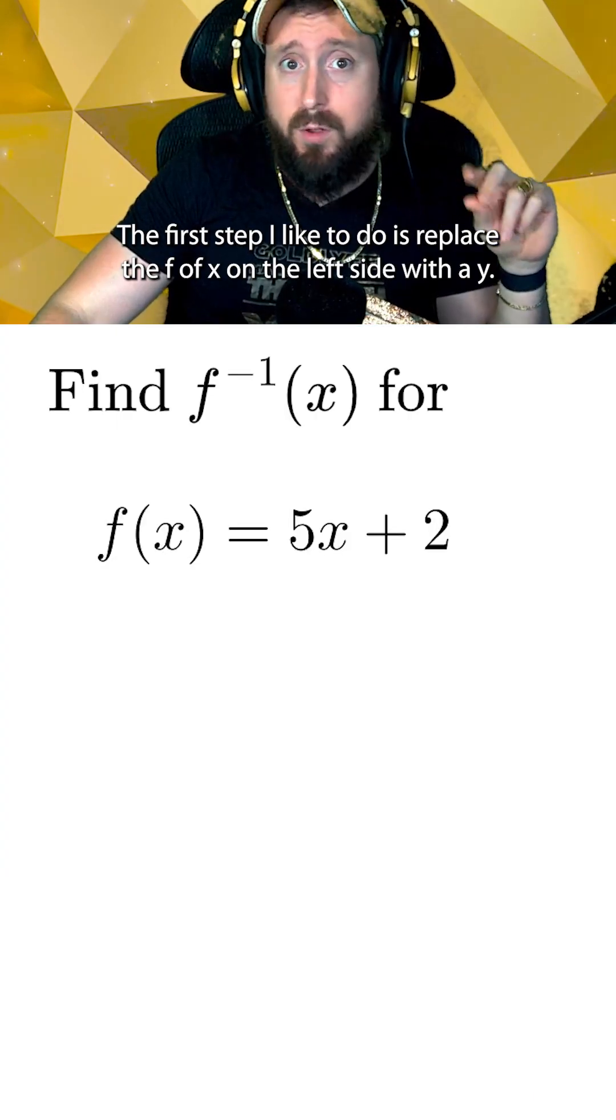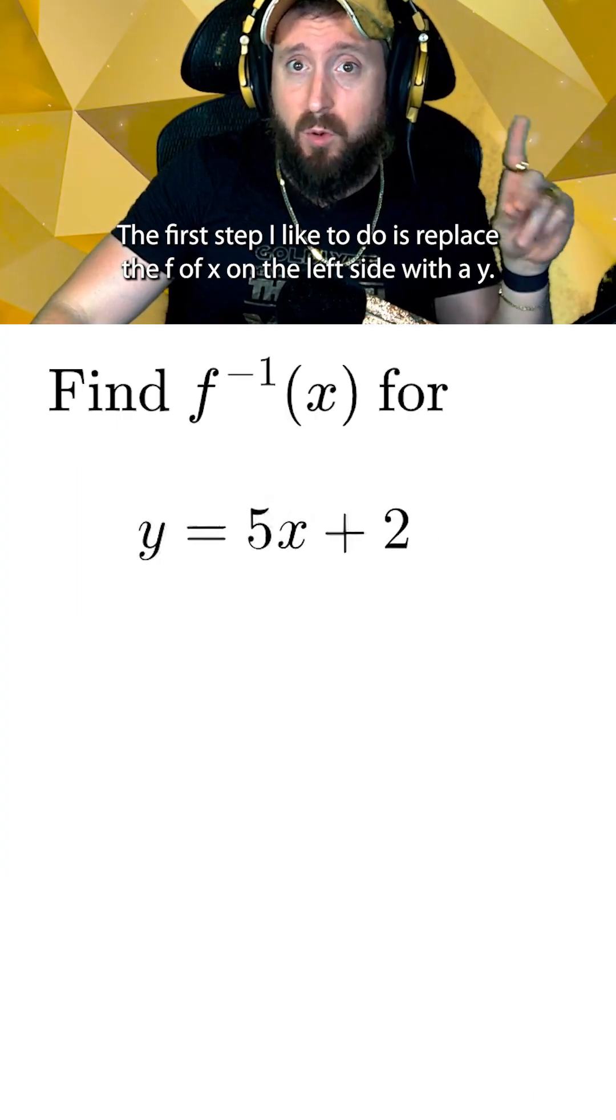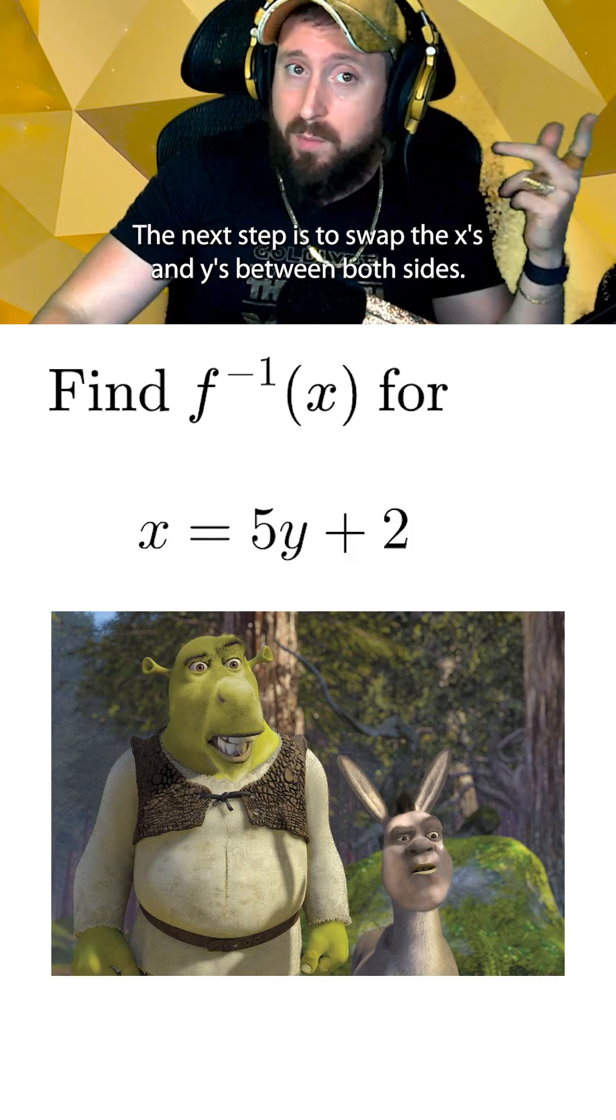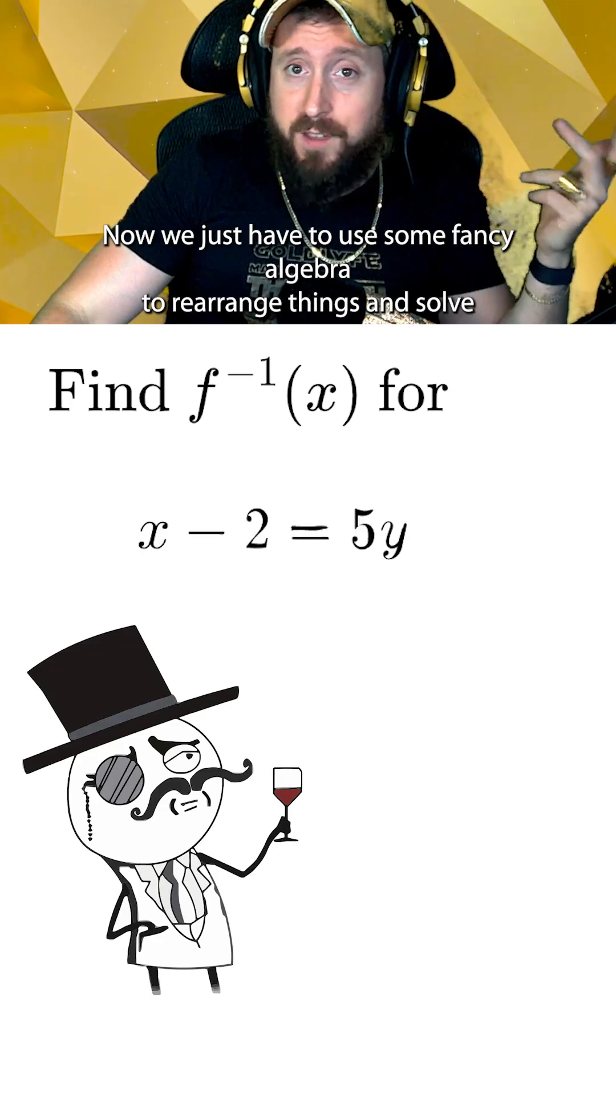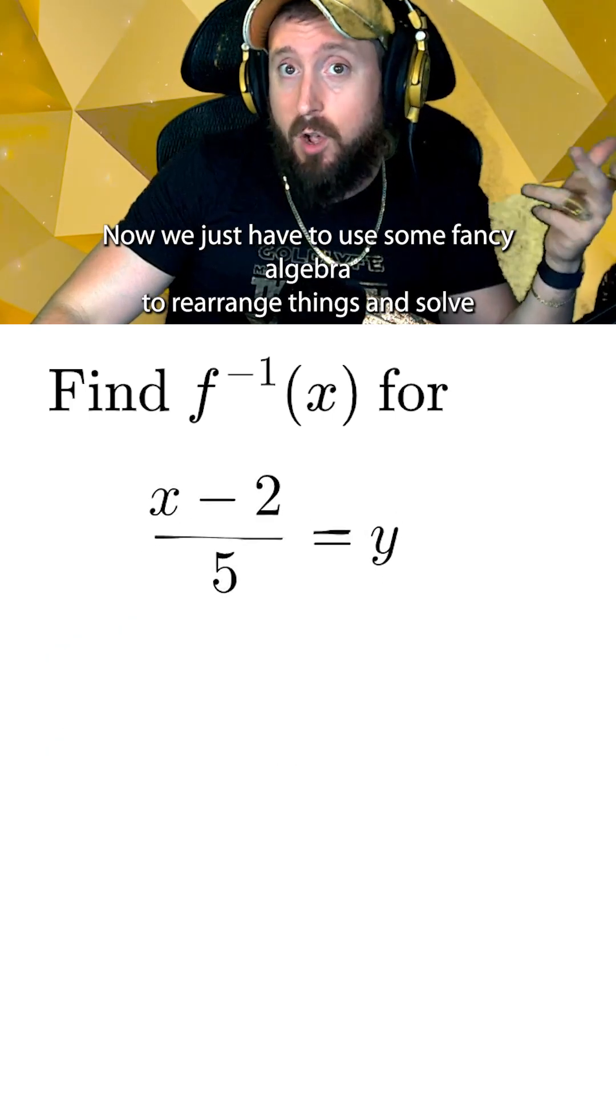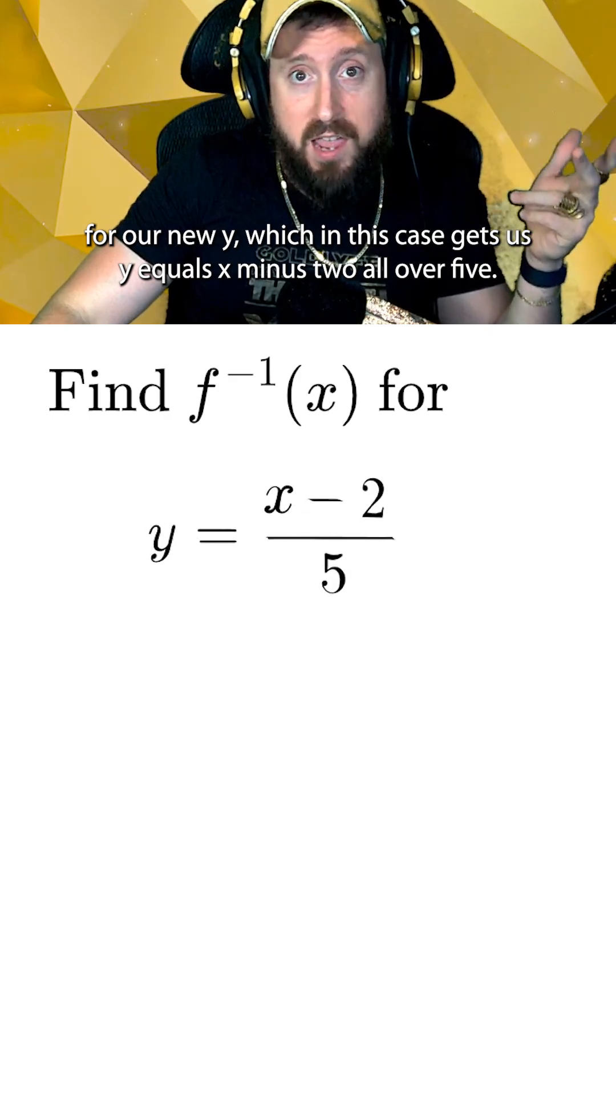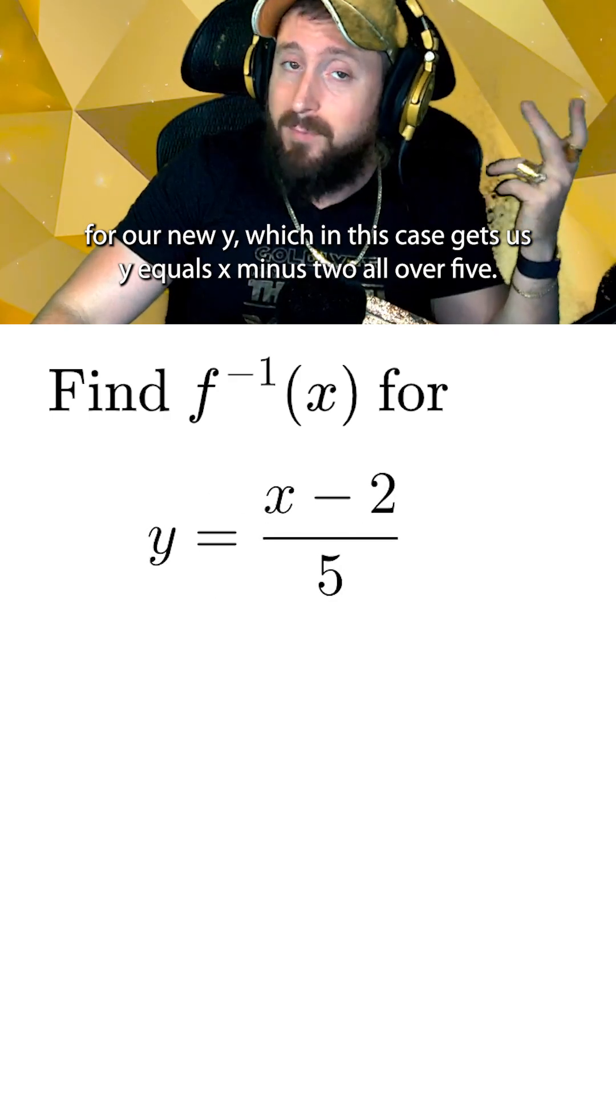The first step I like to do is replace the f of x on the left side with a y. The next step is to swap the x's and y's between both sides. Now we just have to use some fancy algebra to rearrange things and solve for our new y, which in this case gets us y equals x minus 2 all over 5.